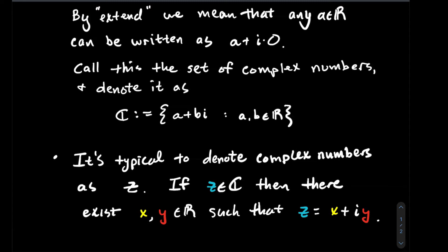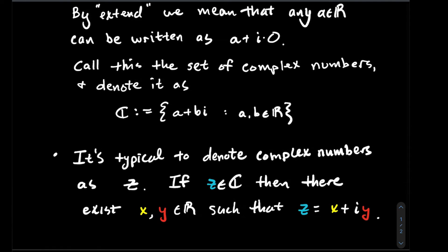A complex number consists of two real numbers, and I'm going to think about those as the components of the complex number. If you're thinking complex numbers sound like vectors, you're on the right track.